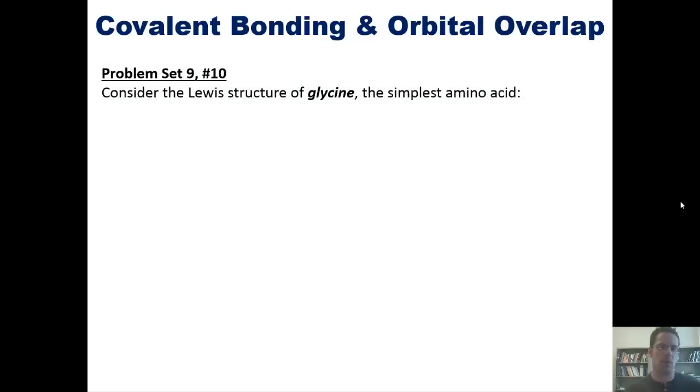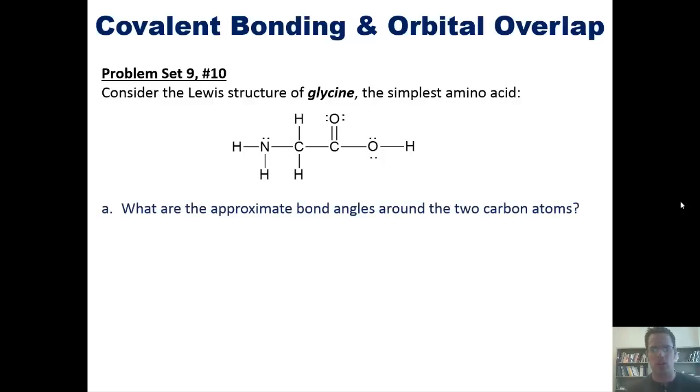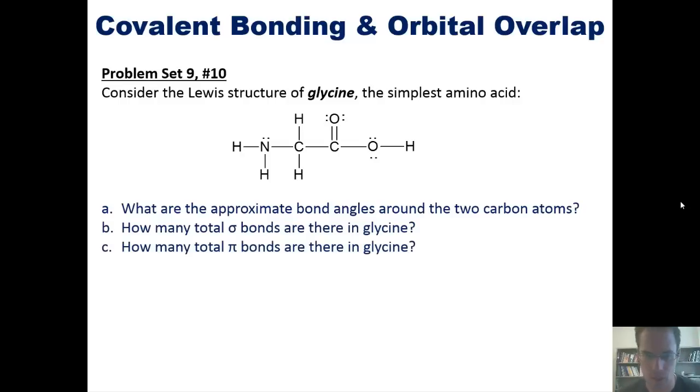That takes us to a gorgeous problem. I want you to consider the Lewis structure of glycine shown here, which happens to be the simplest amino acid. What are the approximate bond angles around the two carbon atoms? How many total sigma bonds are there in glycine? And how many total pi bonds are there in glycine? Now I invite you to try this on your own. I'm going to post a link here to a separate video in which I answer it, that you're welcome to click on if you wish.